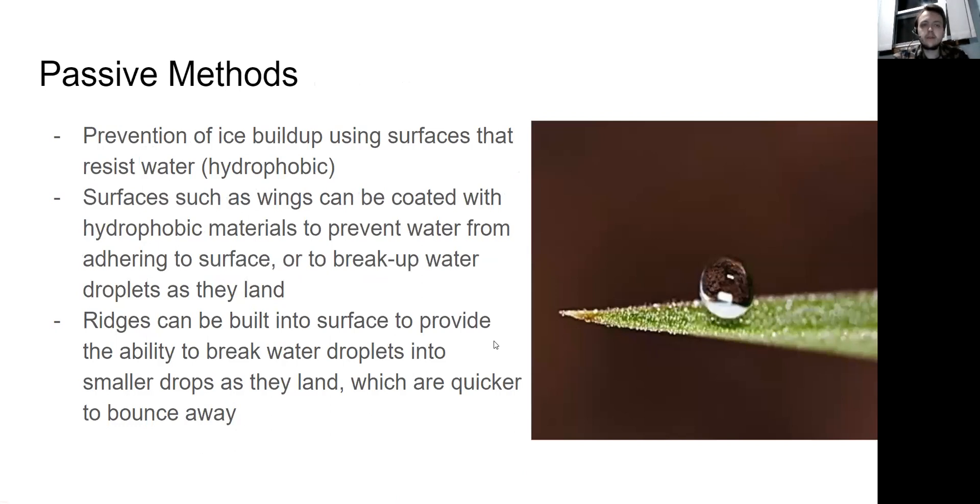All right, some passive methods of ice prevention. This is a method of ice prevention that uses surfaces that resist water, called hydrophobic surfaces, on the aerodynamic surfaces of the aircraft. Wings and other aerodynamic surfaces can be coated with hydrophobic materials to prevent water from adhering to the surface or to break up water droplets as they land. I like this picture because you can see the water droplet is not really adhering to the surface of this little leaf. It's actually not bonding to it, it's just rolling along it.